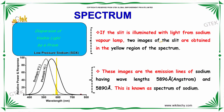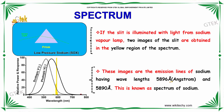If the slit is illuminated with light from a sodium vapor lamp, two images of the slit are obtained in the yellow region of the spectrum. These images are the emission lines of sodium, which have wavelengths of 5896 angstrom and 5890 angstrom. This is nothing but the spectrum of sodium.